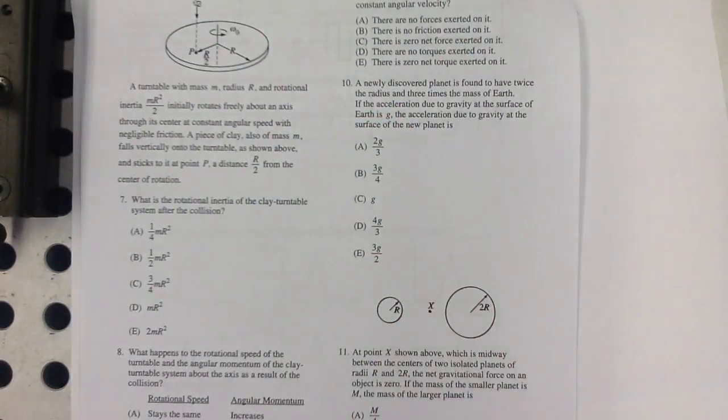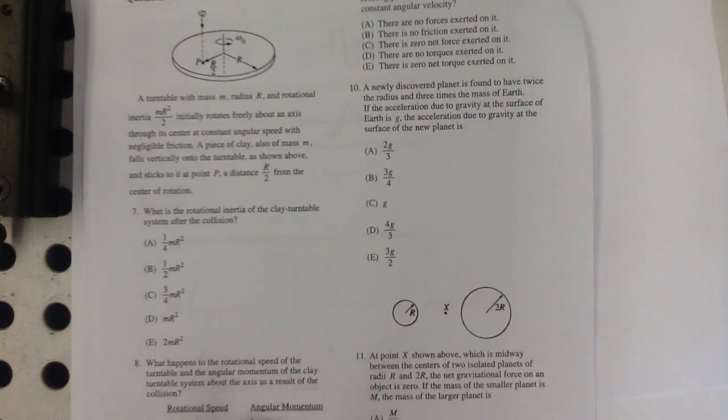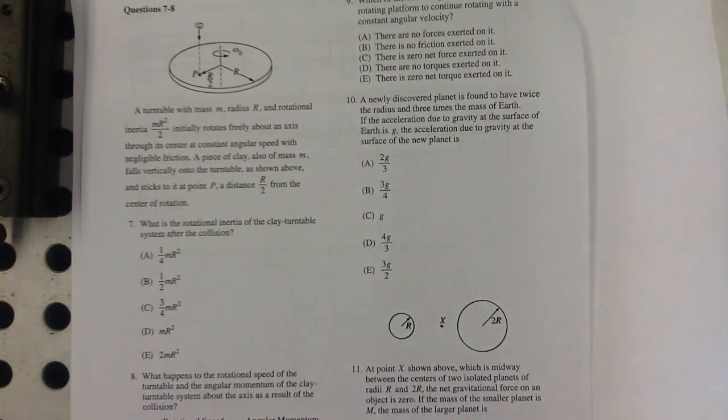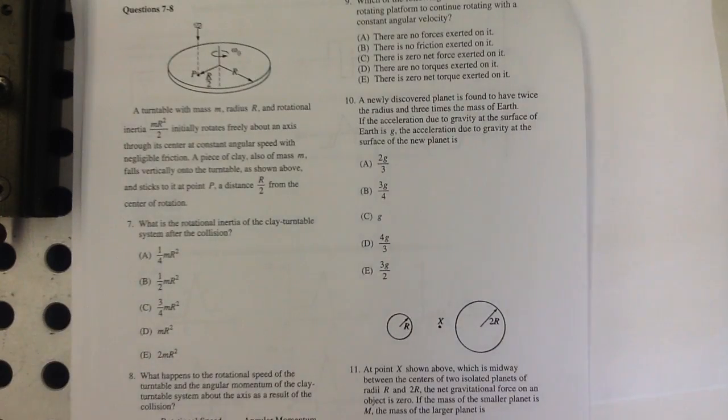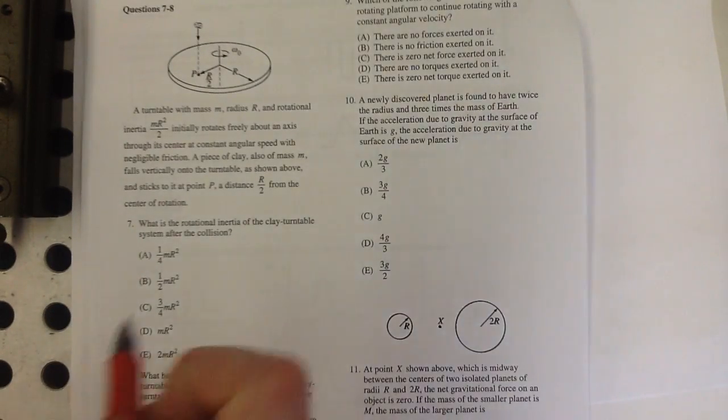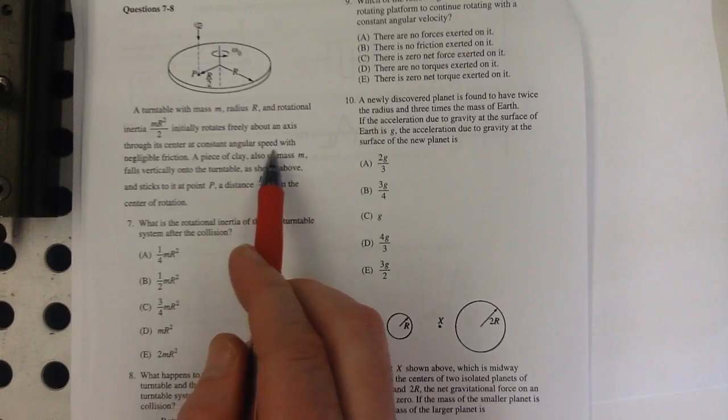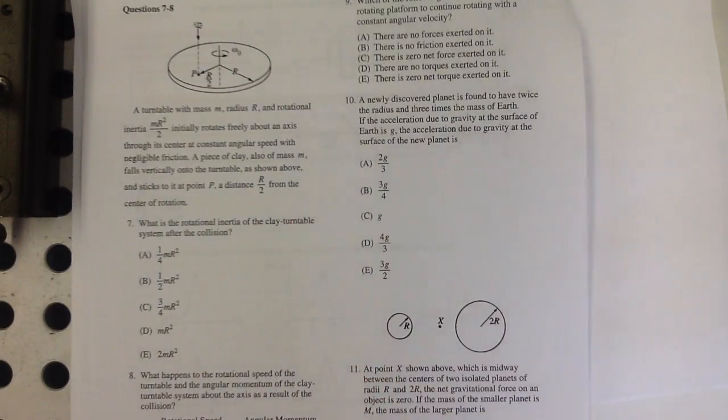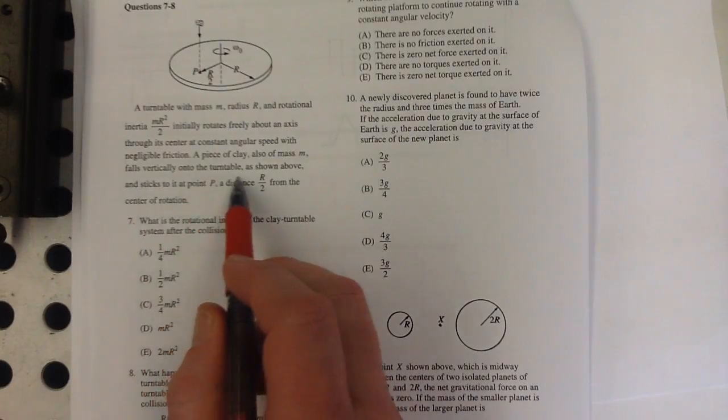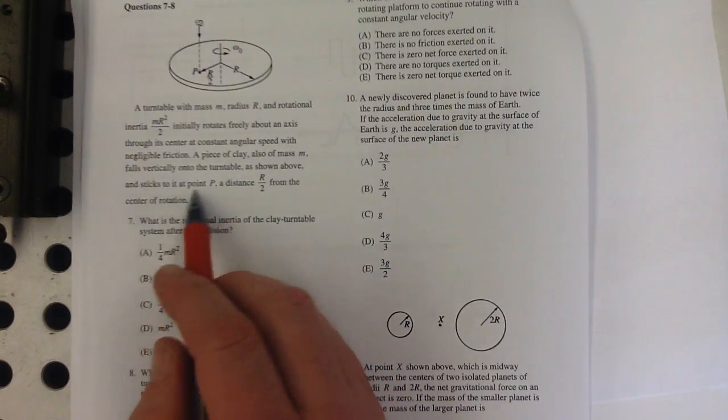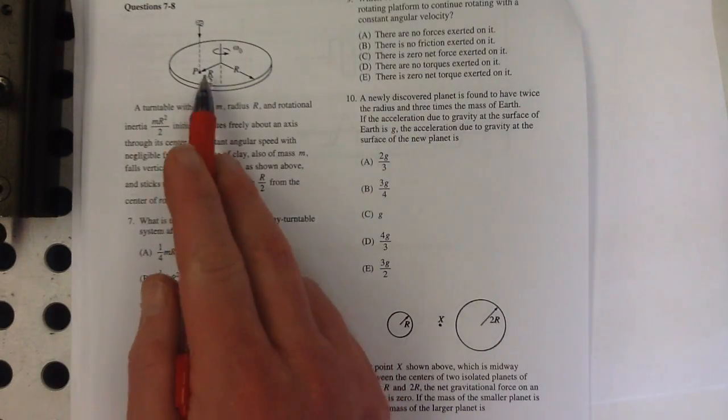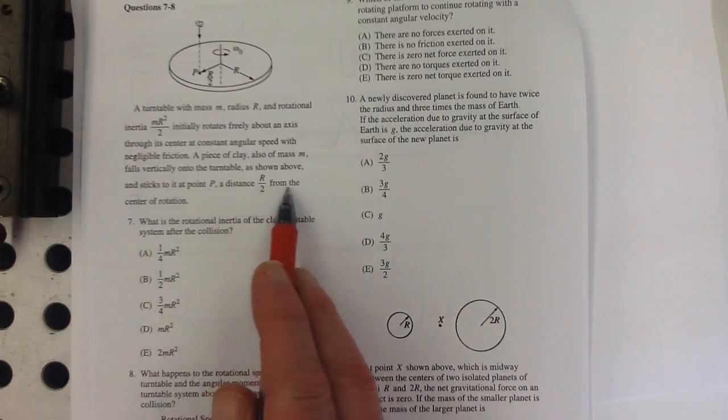Number seven and eight. A turntable with mass m, radius r, and rotational inertia m r squared over two—so it could be a uniform disk—initially rotates freely about an axis through its center at a constant angular speed with negligible friction. A piece of clay, also of mass m, falls vertically onto the turntable as shown above and sticks to it at point p, a distance r over two from the center.